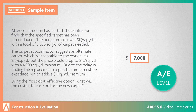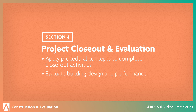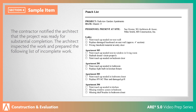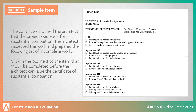In the project closeout and evaluation section, you'll focus on post-construction activities. This is the smallest section of the division, but it covers several important aspects of completing a project. Let's look at a sample question. The contractor notified the architect that the project was ready for substantial completion. The architect inspected the work and prepared a list of incomplete work. Click in the box next to the item that must be completed before the architect can issue the certificate of substantial completion.